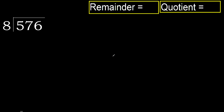576 divided by 8. 5 is less, therefore next. 57 is not less, therefore we work with 57. 8 multiplied by which number is nearest to 57,